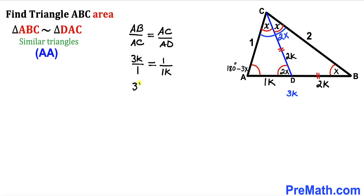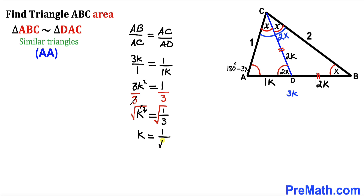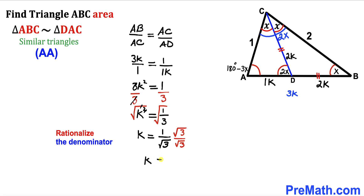Cross-multiplying gives us 3k squared equals 1. Dividing both sides by 3 to isolate k squared gives k squared equals 1 divided by 3. Taking the square root of both sides, k equals 1 divided by square root of 3. Rationalizing the denominator by multiplying by square root of 3 over square root of 3, our k value turns out to be square root of 3 divided by 3.